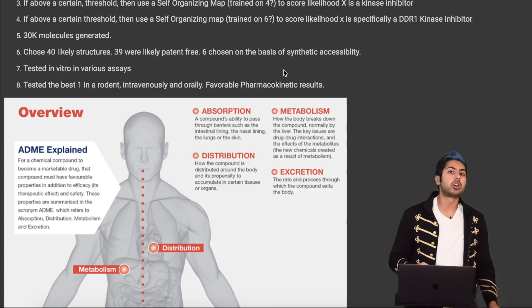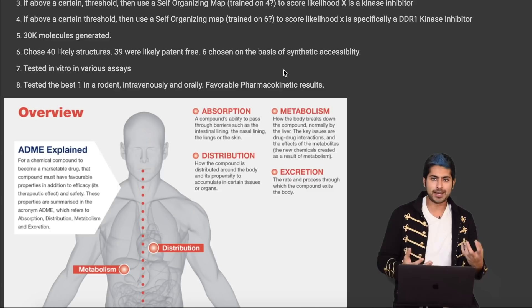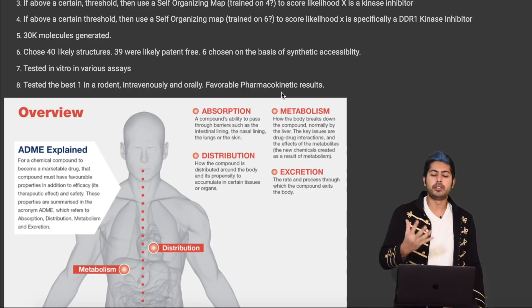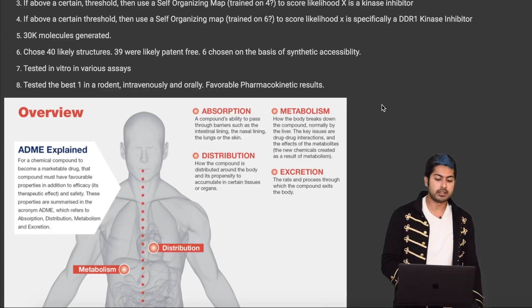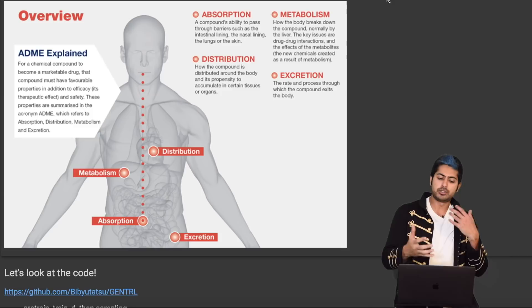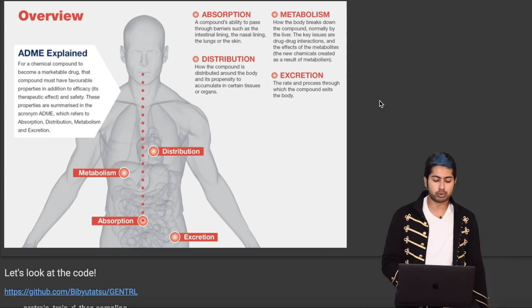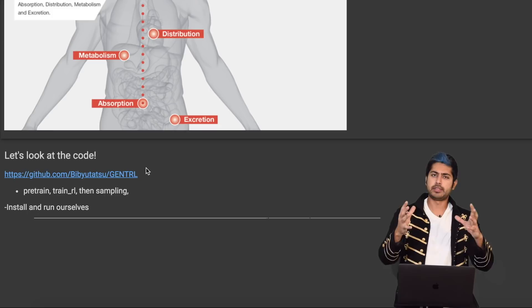After this process they generated 30,000 molecules, chose 40 likeliest drug candidates, 39 of which were likely patent-free. Of those, six were chosen for synthetic feasibility and tested in vitro in various assays. The best one was tested in a live rodent both intravenously and orally, with favorable pharmacokinetic results — all within 21 days (or about 46 including in vitro testing). Then there's the ADME process — absorption, metabolism, distribution, excretion — that's the full preclinical trial process.